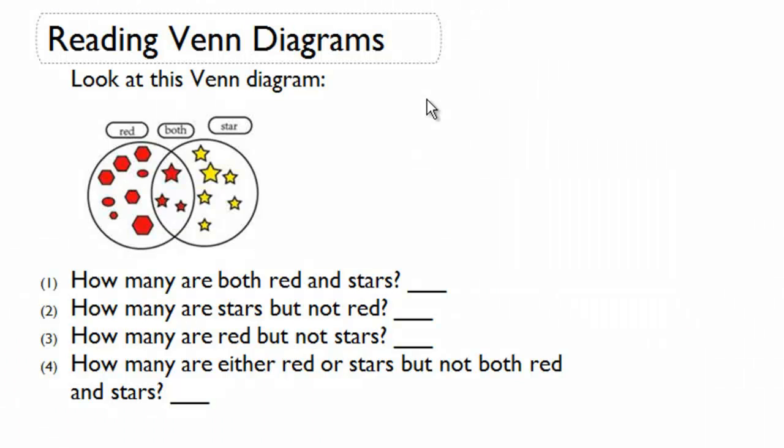Now let's talk about how to read Venn diagrams. Here we have a Venn diagram that deals with items that are red and items that are stars.